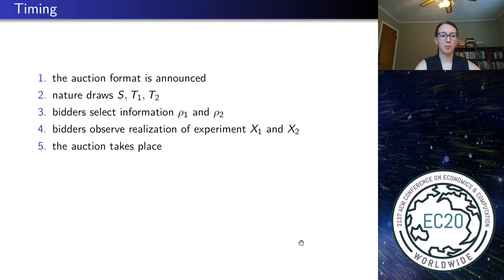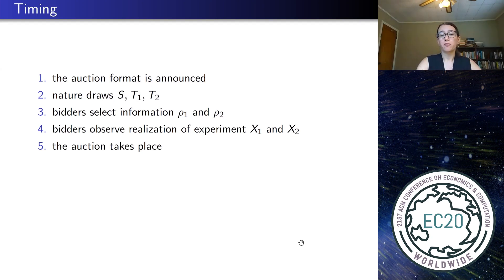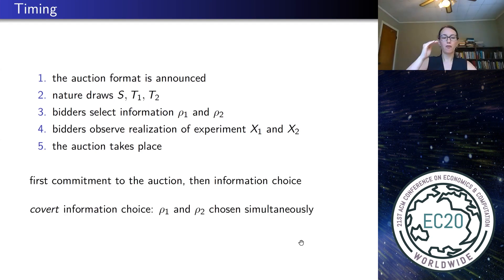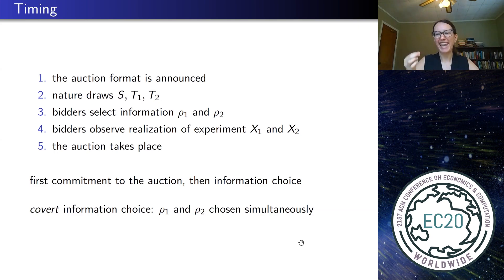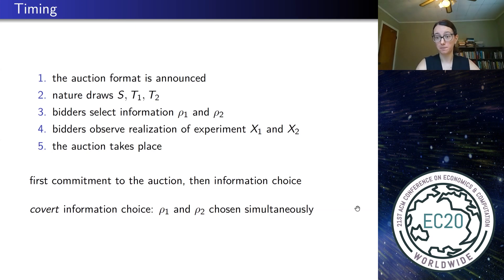Let me briefly go over the timing. The auction format is announced, all components are drawn, and then bidders decide — without observing their components — what to learn about: their information choices rho_1 and rho_2. They then observe the realizations of their experiments and the auction takes place. Two things are crucial: first, there is commitment to a mechanism before information choice, since I'm asking which auction induces learning about which asset. Second, information choices are unobservable — a bidder chooses what to learn and how to bid without knowing what the other person learned.